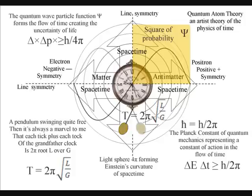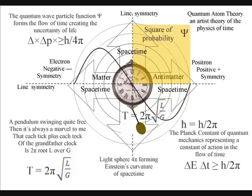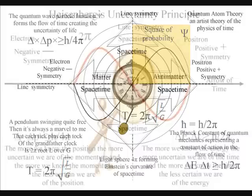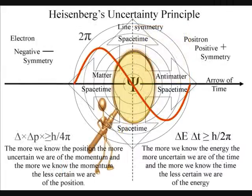When there is an absorption and emission of light, we have a probability wave function that forms the uncertainty of Heisenberg's uncertainty principle of quantum mechanics. In this theory, the physics of quantum mechanics represents the physics of time itself.